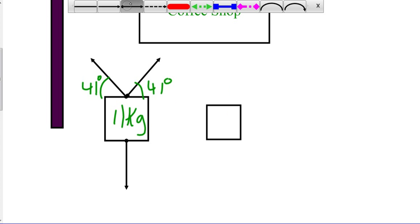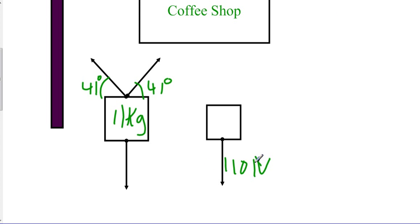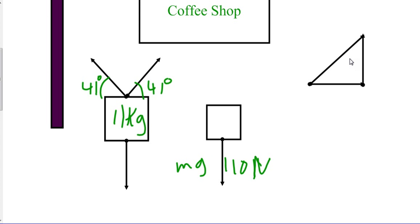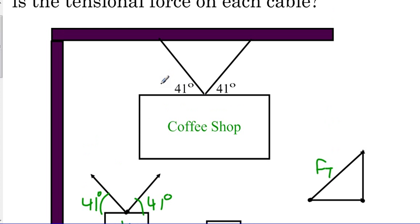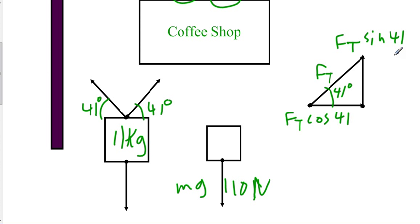With this second free-body diagram, we go ahead and draw on the ones that we know. If that's 11 kilograms, we know the weight is going to be 110 newtons, based on mass times gravity: 11 times 9.8. For each one of these vectors, we want to draw them out separately first. What you see here is the triangle, and this is going to be our force of tension. Because they both have the same angle, we can assume they have the same tension in each one, and the x and y components will be equivalent. This is 41 degrees. For the x component, we do FT cosine 41, because this is the adjacent side, so we use cosine. For the y component, we use FT sine 41.